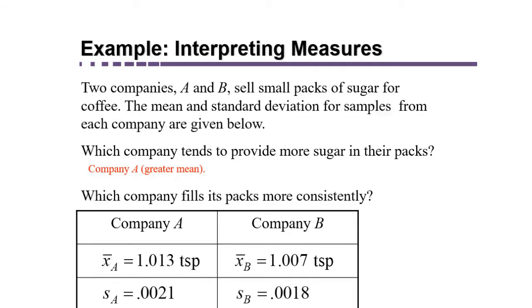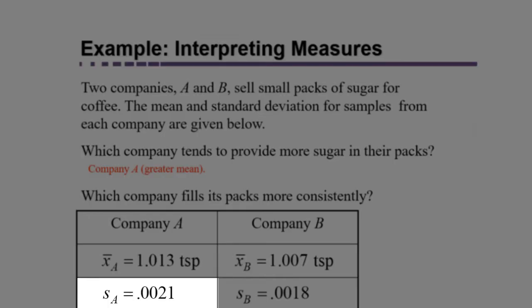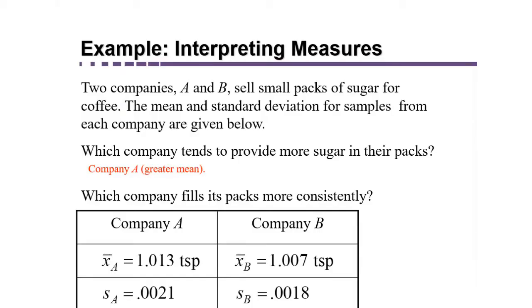Which company fills its packs more consistently? That is a question about standard deviation — how spread out the results are. Company A varied by 0.0021, whereas company B varied by 0.0018. Which one varies more from the average? That would be company A. Company B then fills its packs more consistently — it's more reliably about a teaspoon than company A, which varies a lot more from packet to packet.